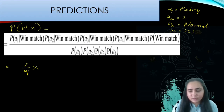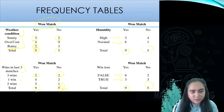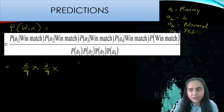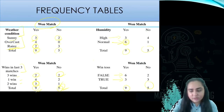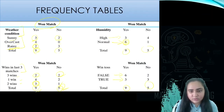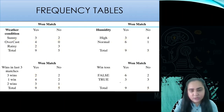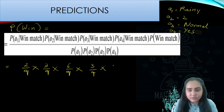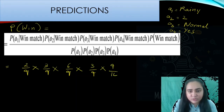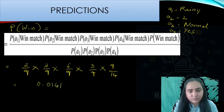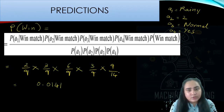For A1 (rainy), when it's raining there are two yeses out of nine total, so that's 2/9. For A2 (two wins), there are three yeses, giving 3/9. For A3 (normal humidity), there are six yeses, giving 6/9. For A4 (coin toss true), there are three yeses, giving 3/9. The probability of winning the match overall is 9/14 (nine yeses out of 14 total). Evaluating all this gives approximately 0.0141.